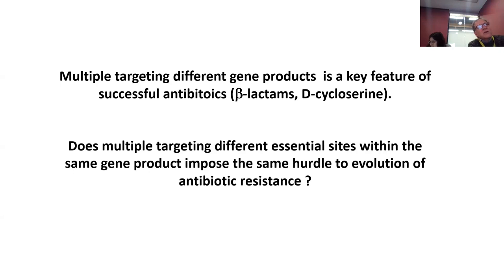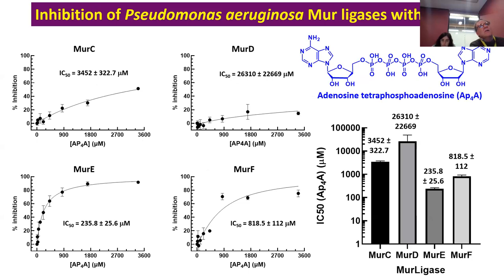The potency of those compounds derives from their ability to take out different gene products. The question we really had was: if we were targeting two binding sites within the same molecule, could that facet of multiple targeting of the same protein at different sites present a similar hurdle to the evolution of resistance? With that question in mind, we started with adenosine tetraphosphoadenosine (AP4A), which turns out to be a particularly poor inhibitor of MurC and MurD — MurD does appear to have a 0.2 millimolar IC50 against MurE, with some activity toward MurF, but these interactions are fairly weak.